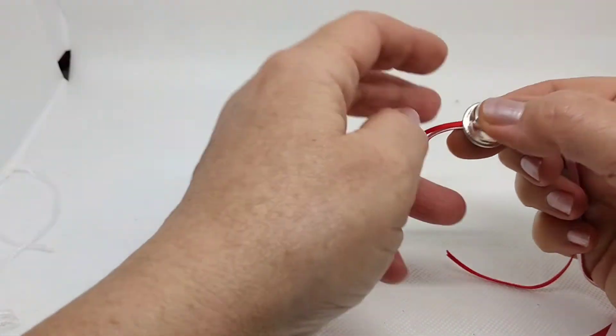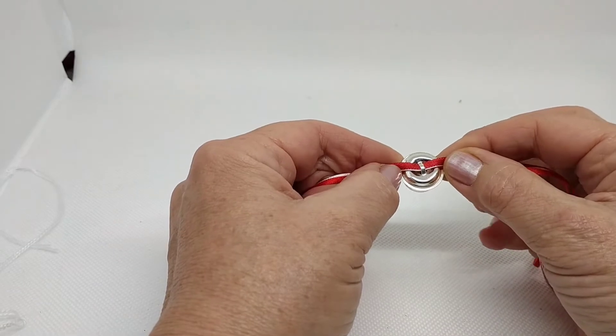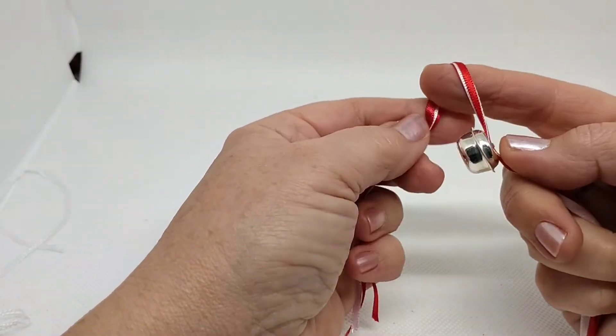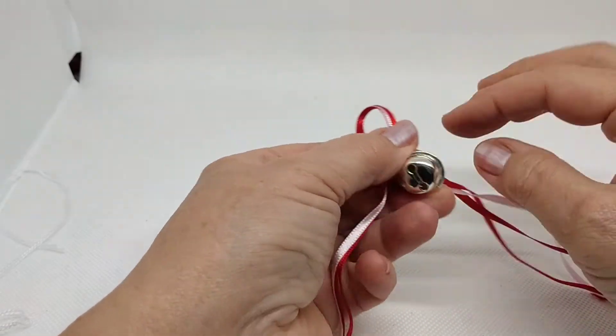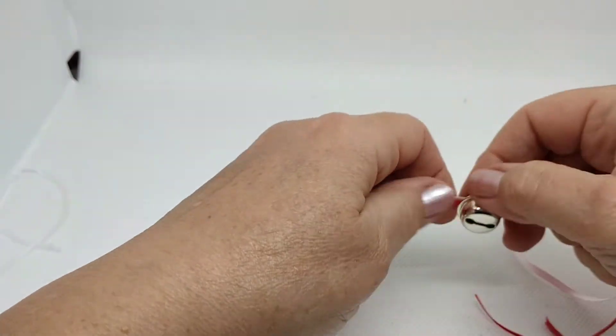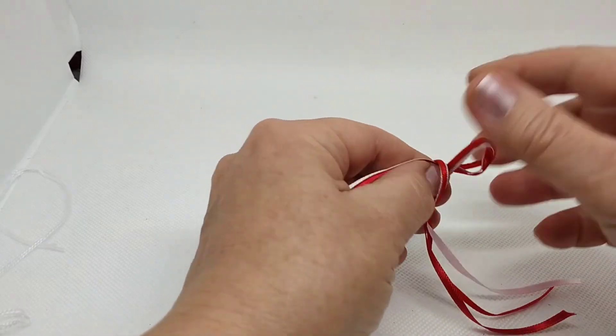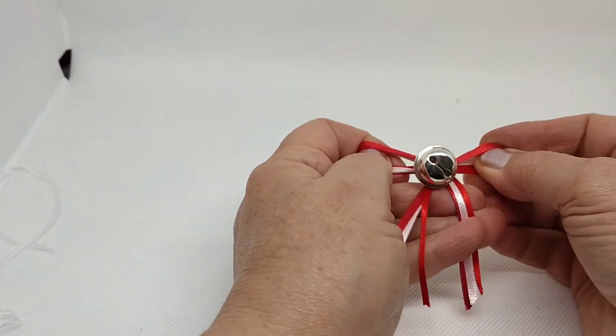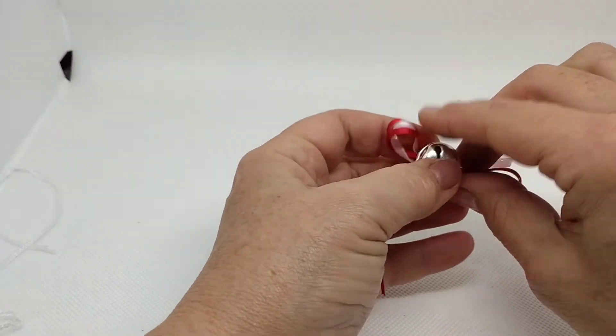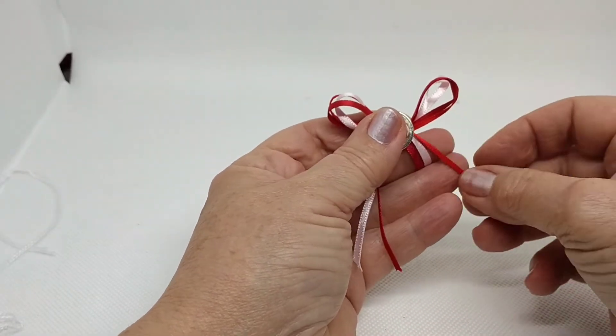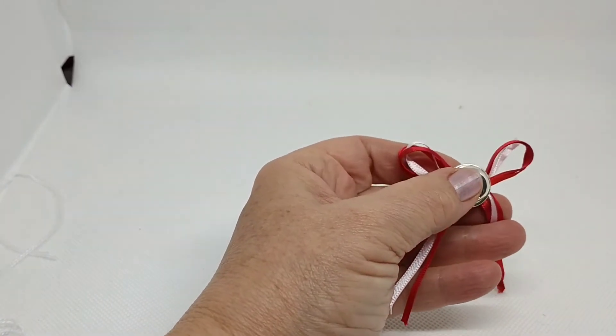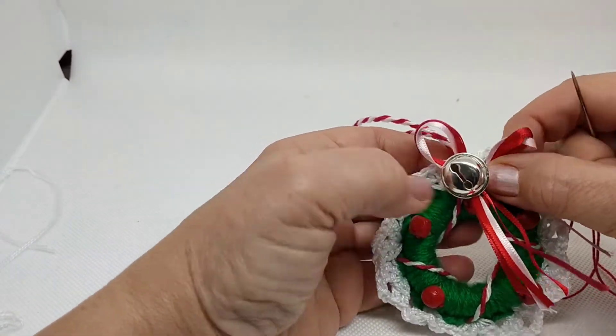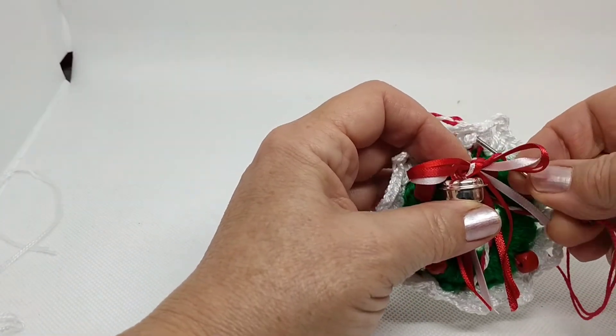Ahora ya es el momento de colocarle el lacito. Yo he insertado el lazo por el asa que tiene el cascabelito y aquí vamos a hacer un lacito. Vamos a procurar que quede en el centro. Y ya tenemos nuestro lacito hecho. Ahora ya es solo pegarlo. Lo podemos pegar con silicona, pegamento o cocido como prefiramos. Yo lo voy a hacer cocido.